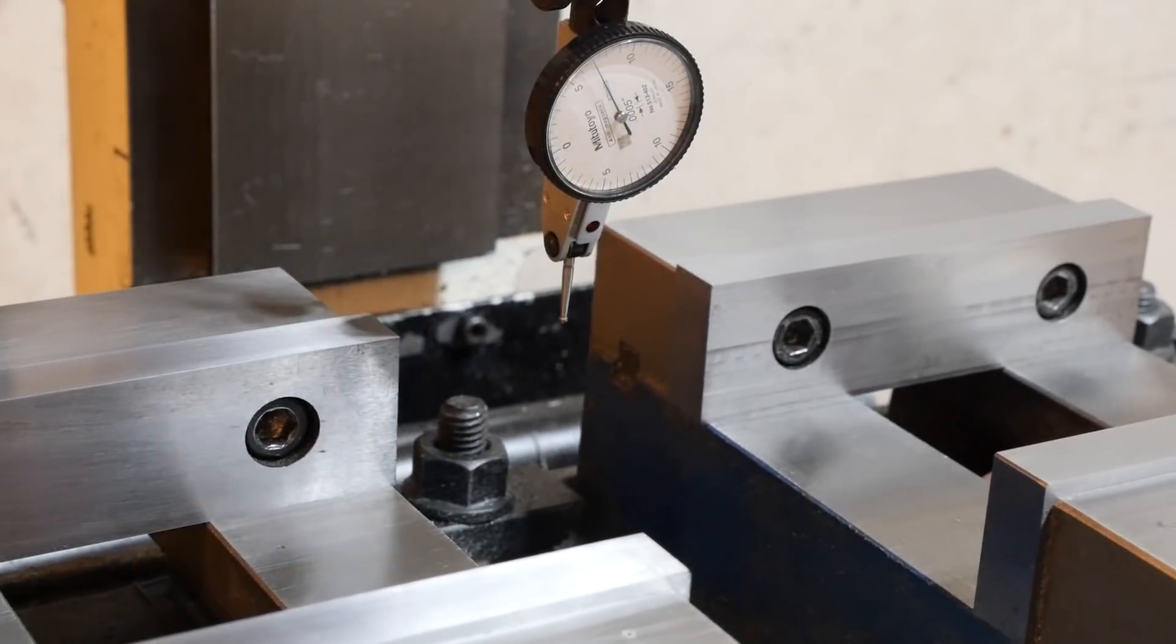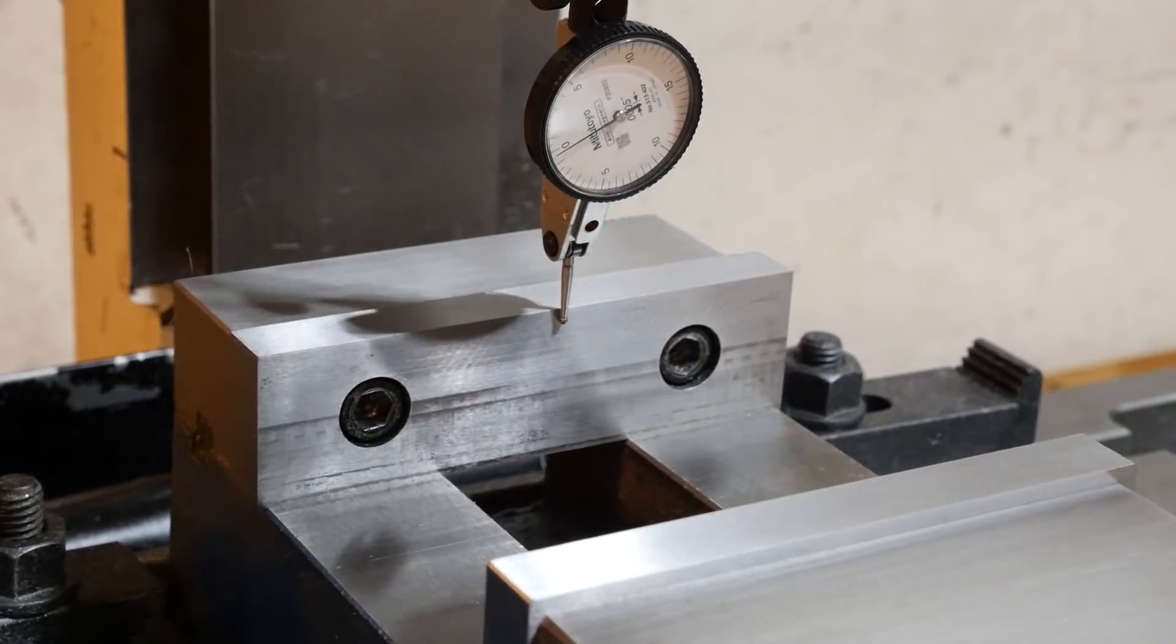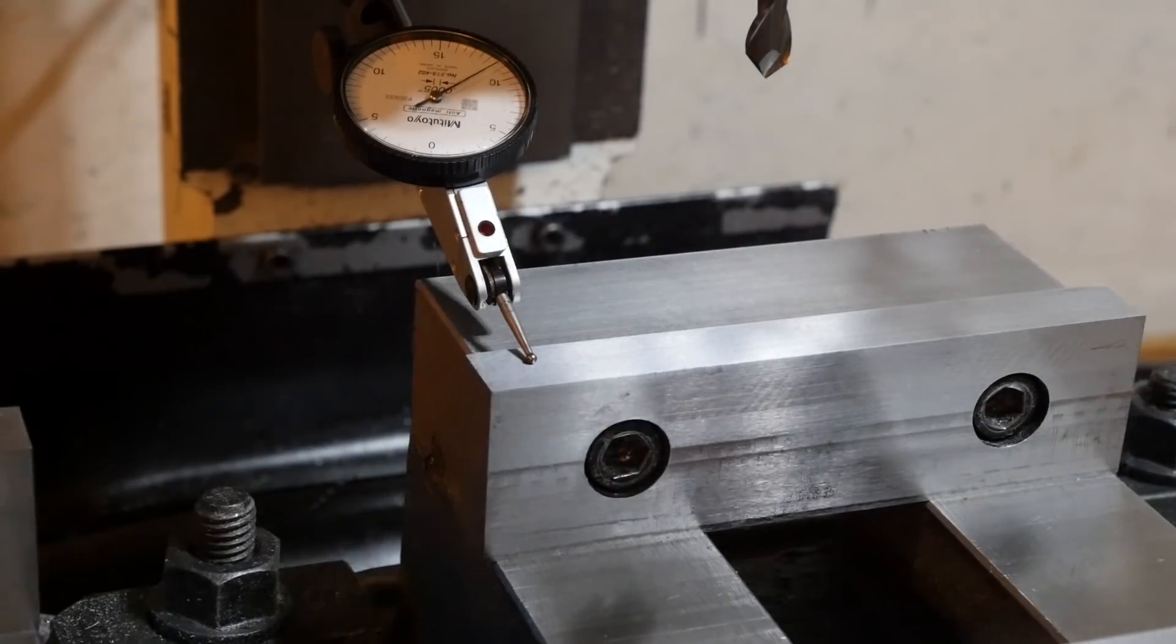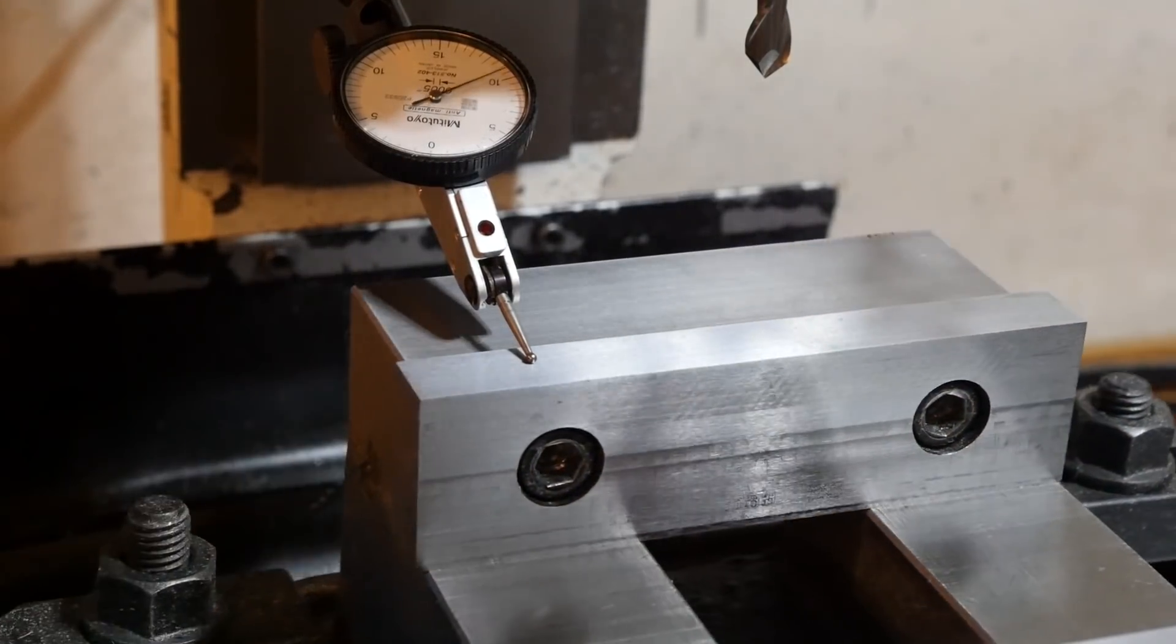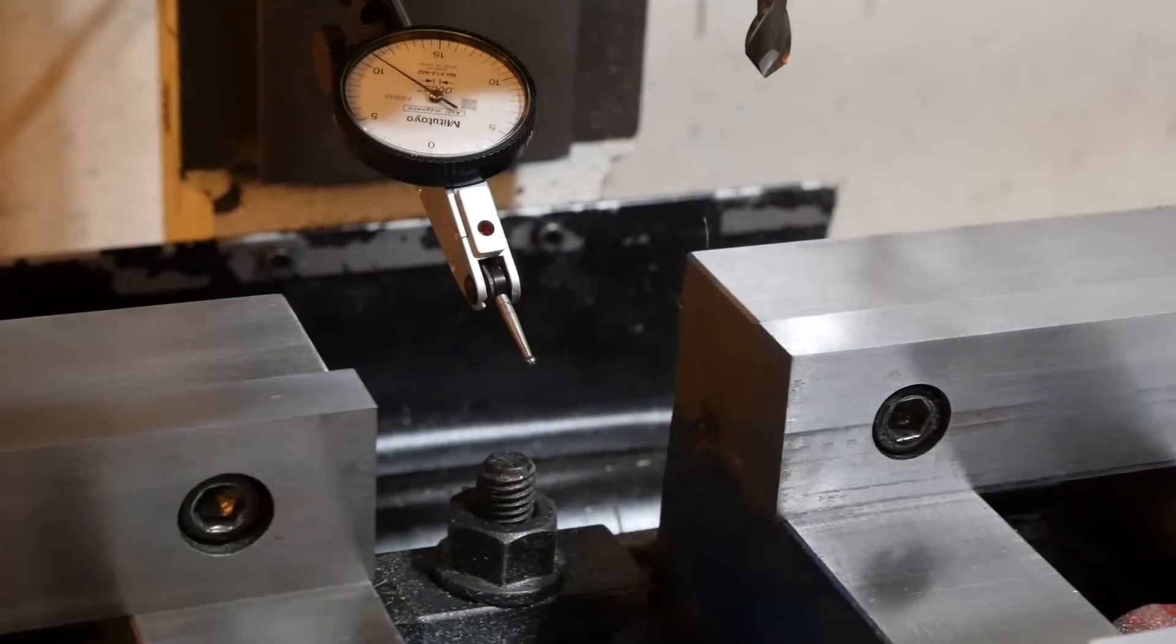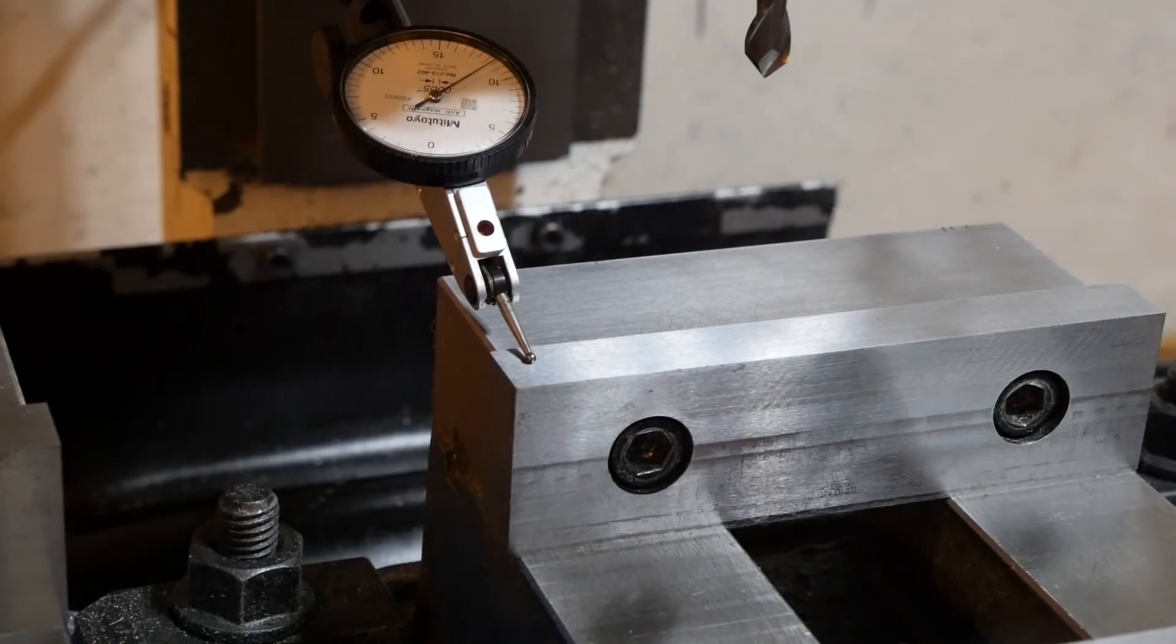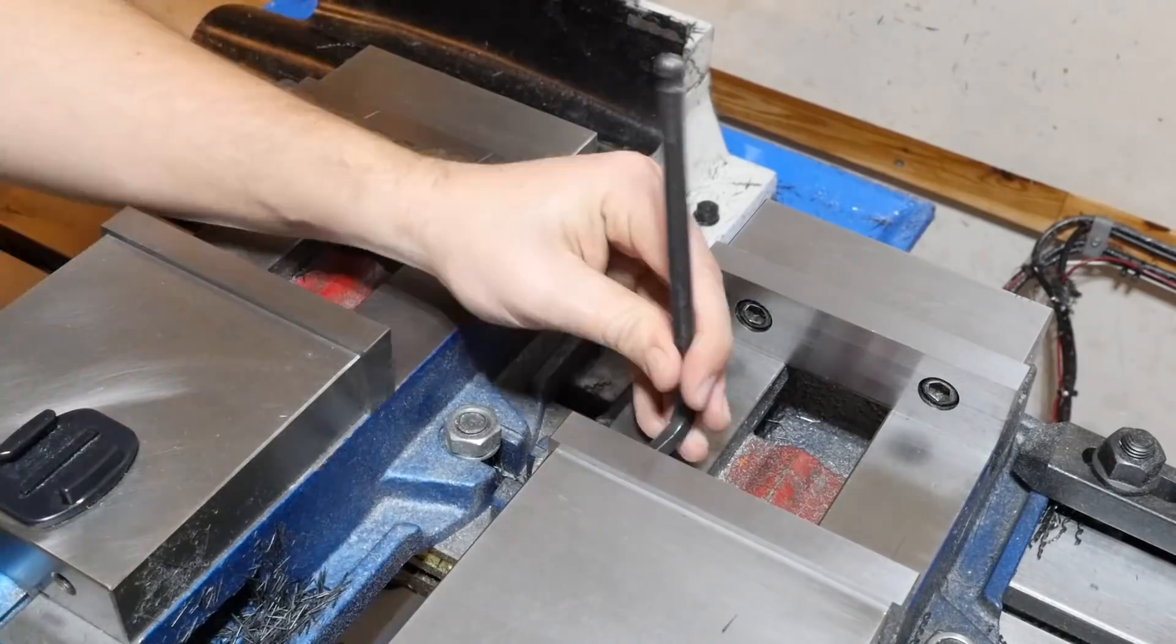So we know these faces are pretty true to one another, but the problem comes with the height offset. There you can see we've got about a 25 thou variability between the heights of the vise jaws. And this is kind of just what you get with these really, really cheap Chinese vices.